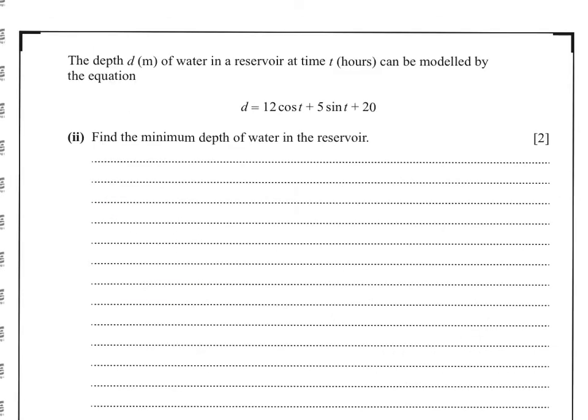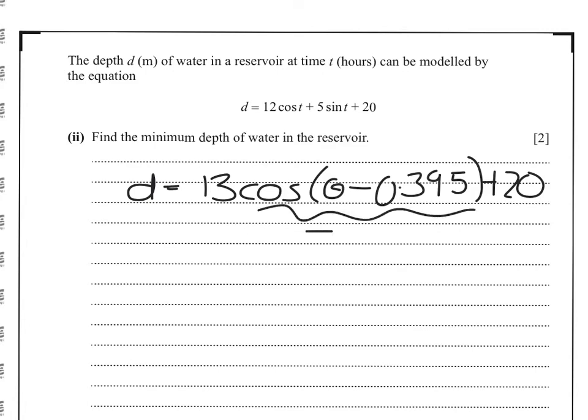Using our answer to part 1, d equals 13 cos of theta minus alpha, which we find to be 0.395 plus 20. Cos, the minimum value it can take, is minus 1. So the minimum depth of water, therefore, will be minus 13 plus 20, which is 7.